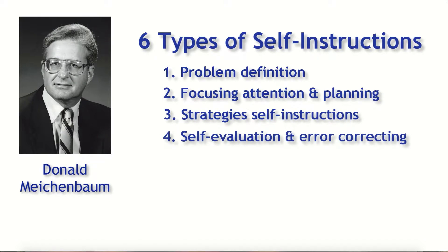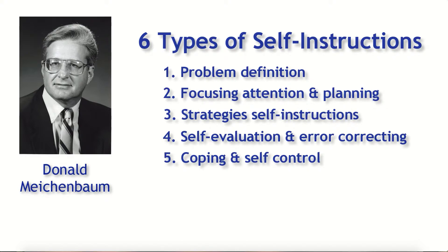Type four is self-evaluation and error correcting. Here, the model or the student is saying to themselves: Do I have three reasons? Oh, no, I don't. I know what I need to do — I need to think of one more good reason. Type five is coping and self-control. This can include coping with frustration, coping with wanting to quit or being tired of working. And six, self-reinforcement. This is often done in conjunction with self-evaluation: I needed three good reasons — do I have at least three? Yes, I do. That's great. Self-reinforcement is very simple and should occur very naturally based on meeting your goals.